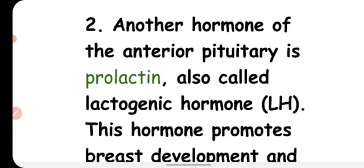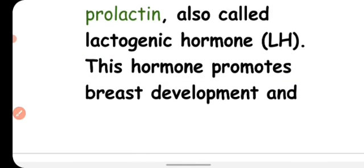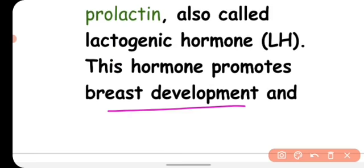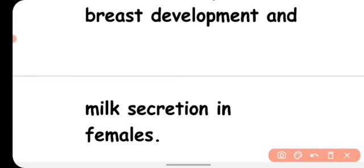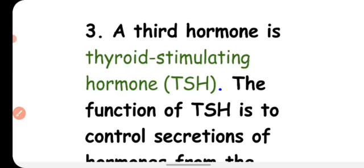The second hormone released from the anterior pituitary is prolactin, also called lactogenic hormone. This hormone promotes breast development in females during childbirth and also helps in milk secretion for the child.